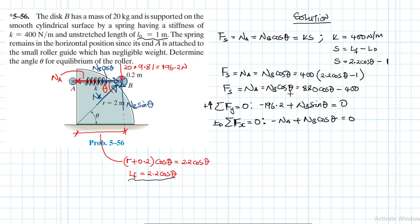Let's apply the other equations. Summation of forces in the y direction. What do we have in the y? We have minus 196.2 newton plus NB sin theta is equal to zero.